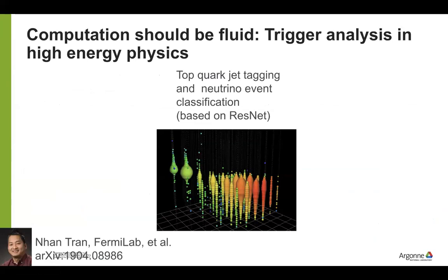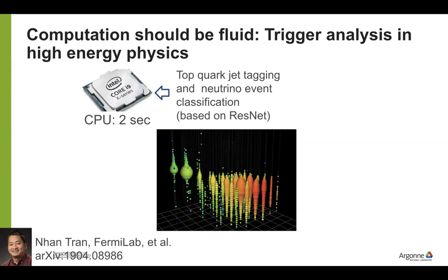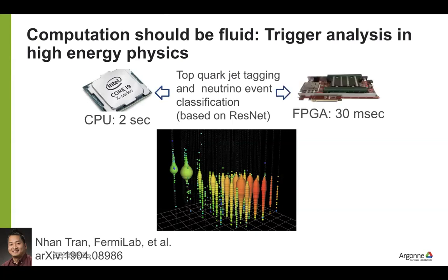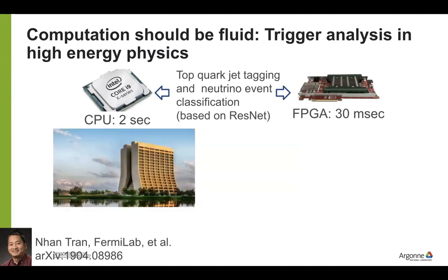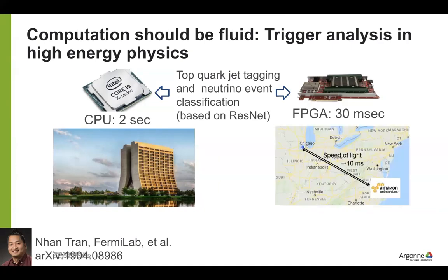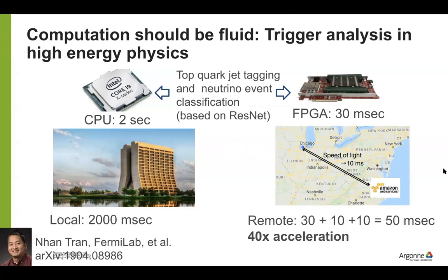A compelling example: a Fermilab group does top-quark jet tagging and neutrino event classification using a ResNet. This tagging analysis takes about two seconds on a CPU but only 30 milliseconds on an FPGA. They didn't have an FPGA, so they provisioned one at Amazon's Virginia data center - about 10 milliseconds away by speed of light. They can outsource computation to that FPGA and see a 40x acceleration, really highlighting the need for fluid computation.